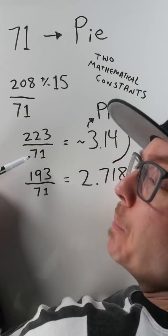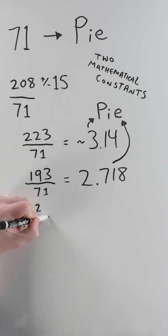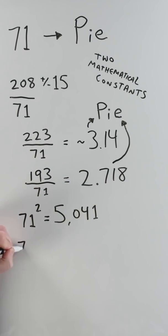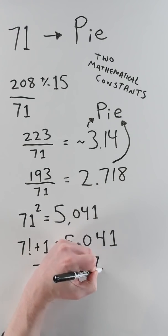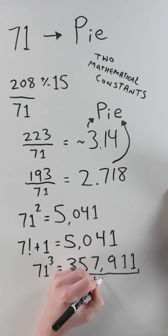All of this is predicated on dividing by 71, which is pretty weird. But 71 squared equals 5,041, and 7 factorial plus 1 equals 5,041. And 71 cubed equals 357,911. The odd numbers 3 through 11.